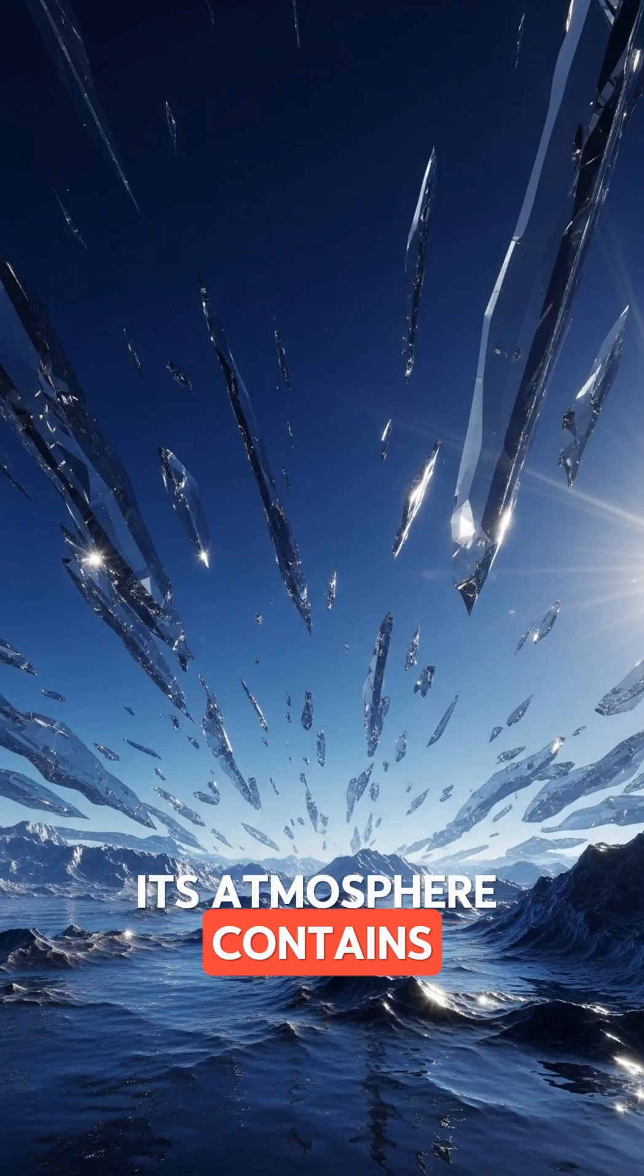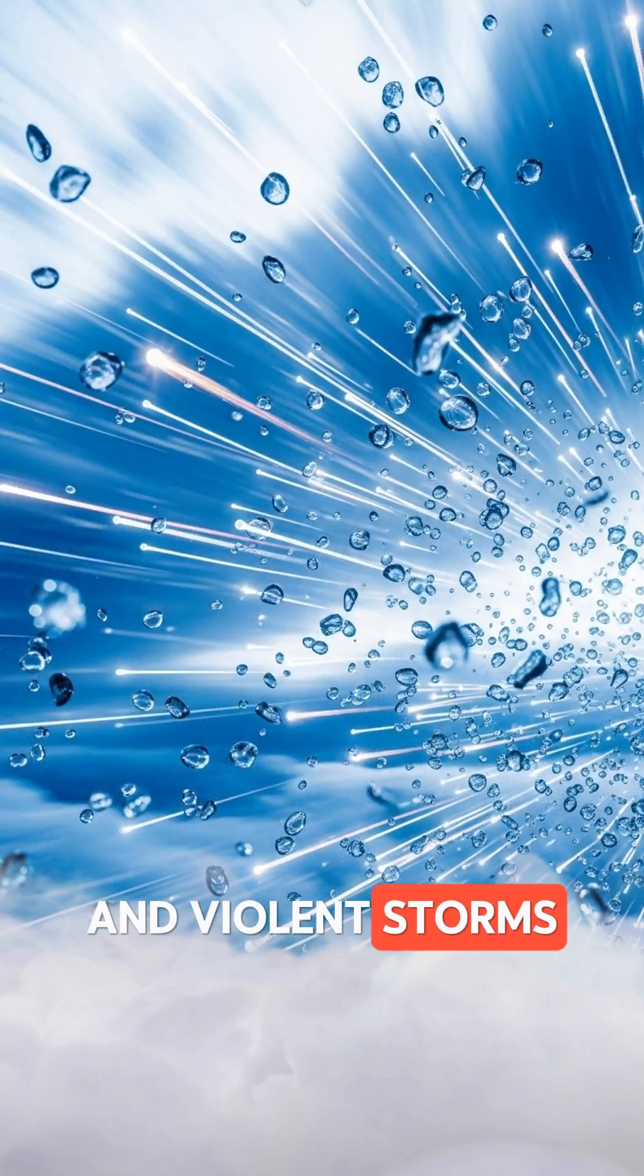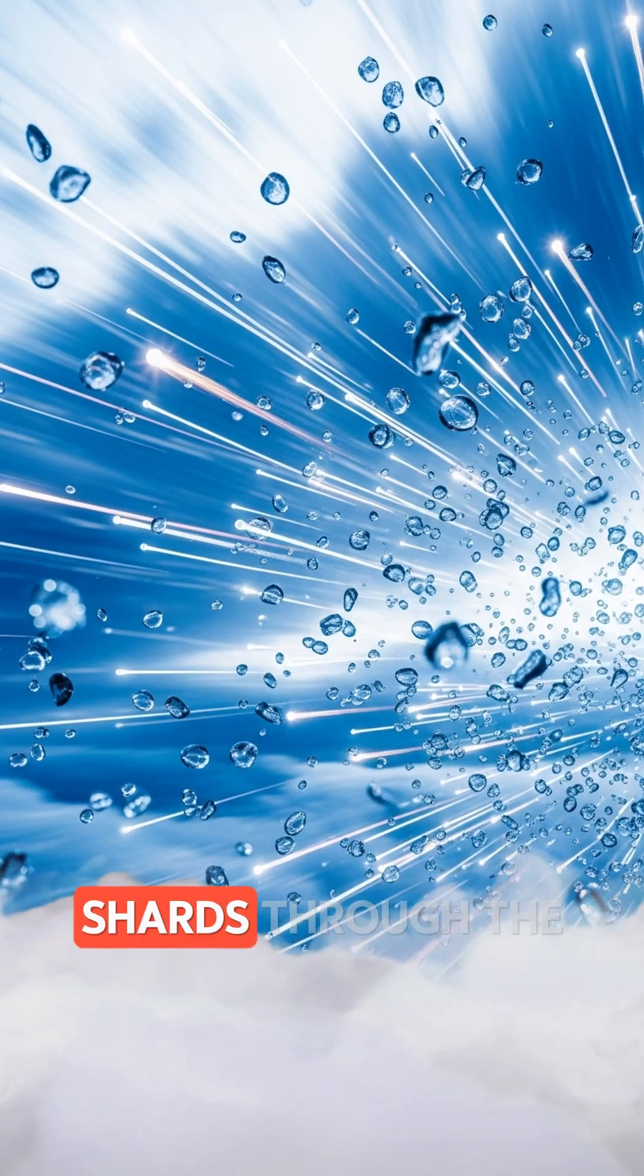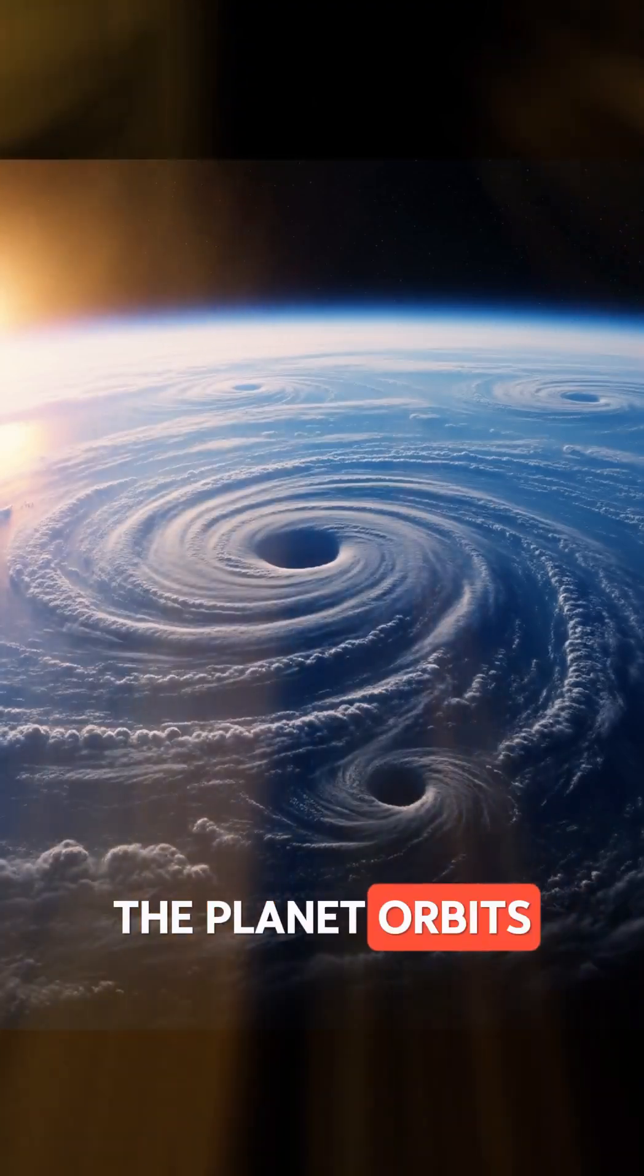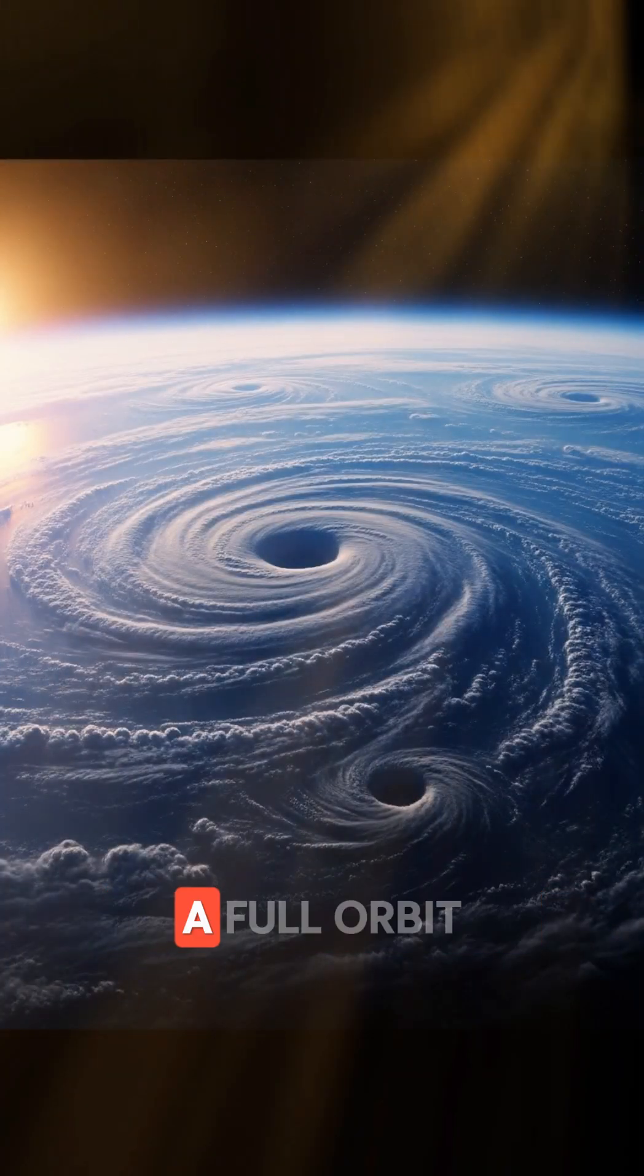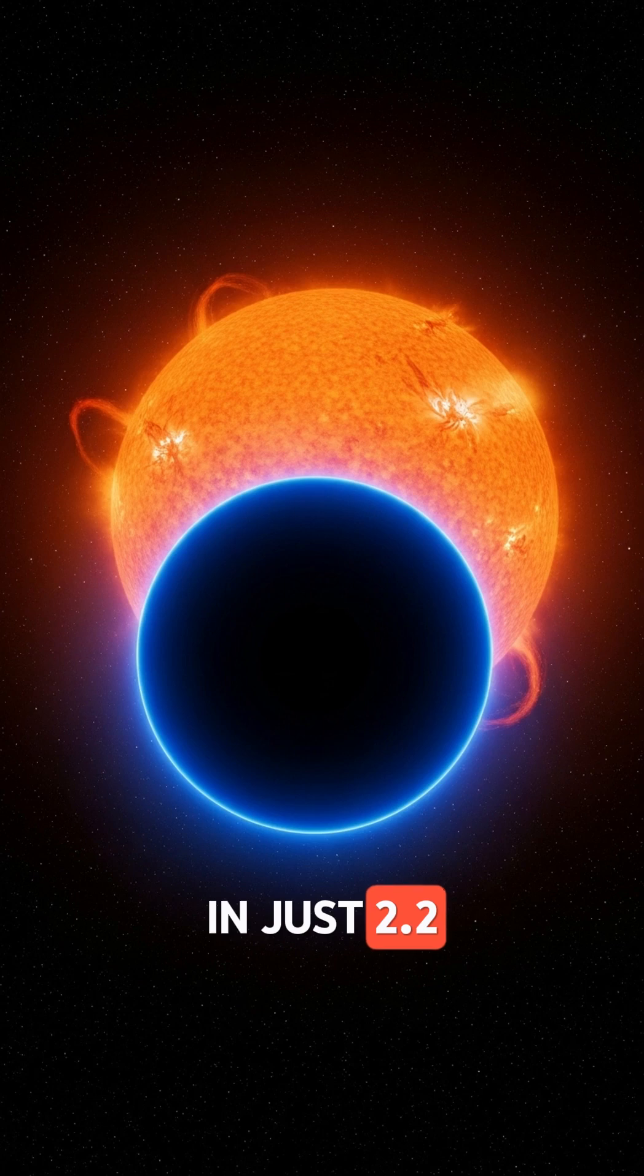Its atmosphere contains silicate particles, and violent storms fling molten glass shards through the air at terrifying speeds. The planet orbits so close to its star that it completes a full orbit in just 2.2 days.